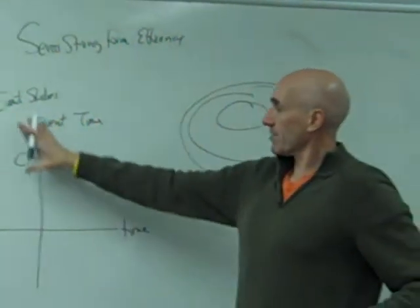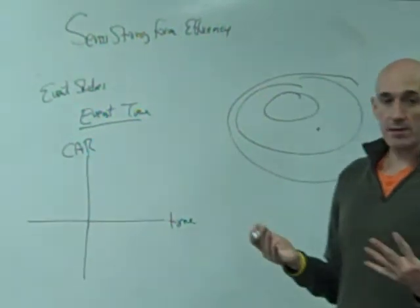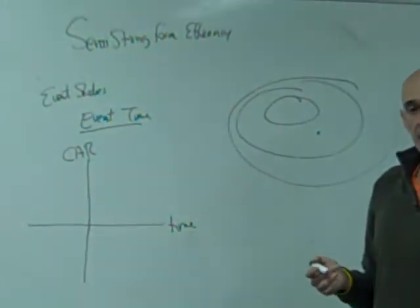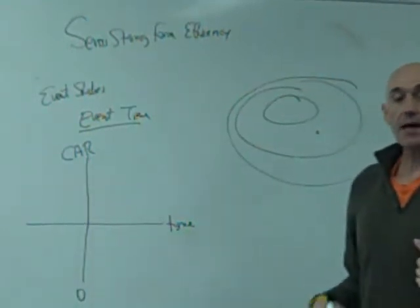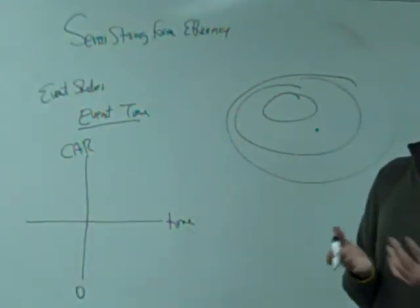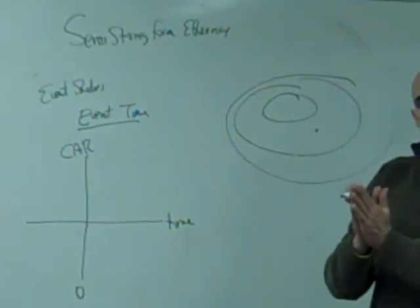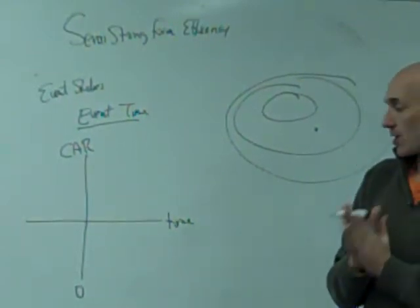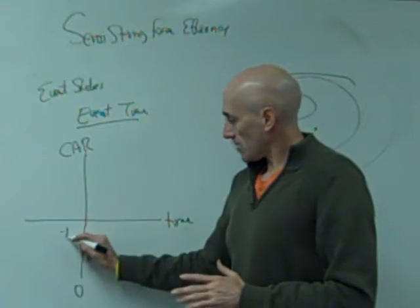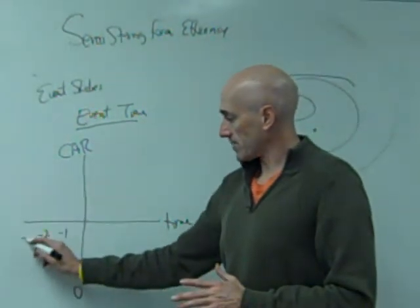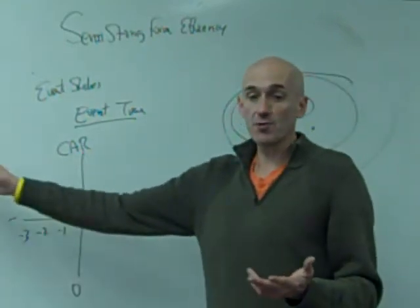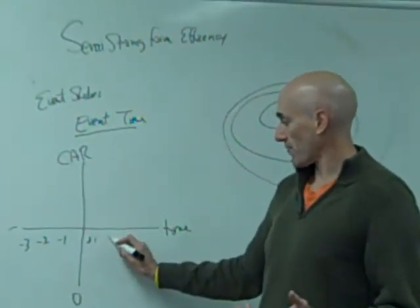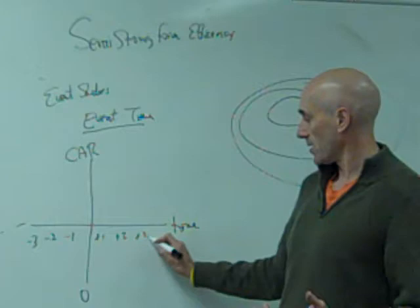What we do in the event study is we group things in event time. Event time is centered on day zero. Day zero is the date of the announcement. It used to be in months. Now it's in minutes even in some cases. But when it is announced, you see how fast the market reacts. And you go back in time: day minus one, minus two, minus three, et cetera. You go back as far as you want. And similarly, you go out in front of time, one, two, three, et cetera.